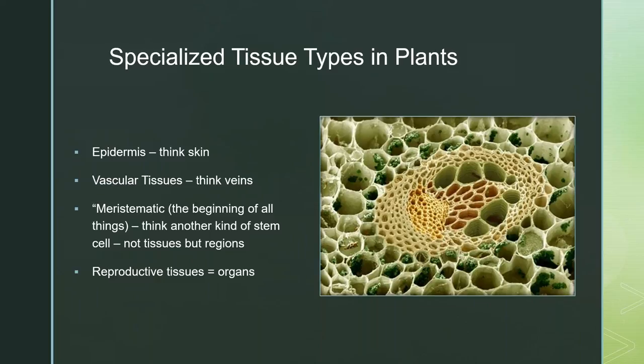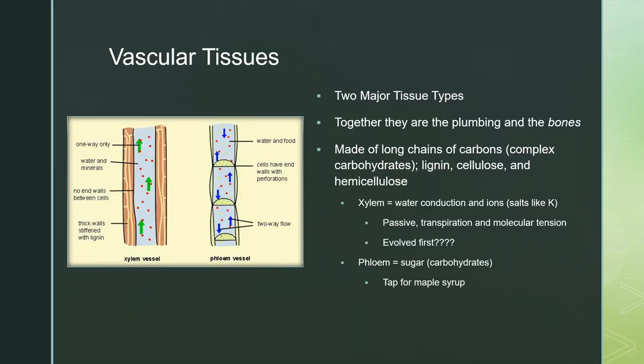Vascular tissue is one way we differentiate between ancient non-vascularized plants — that's your bryophytes — whereas ferns and more recent plants have vascular tissue. Vascular tissue is composed of two major types: the xylem and the phloem. These are basically the conducting veins, but also the bones of the plant's body. Plants from a couple of inches tall to a couple of hundred feet tall don't have any skeletal tissue.